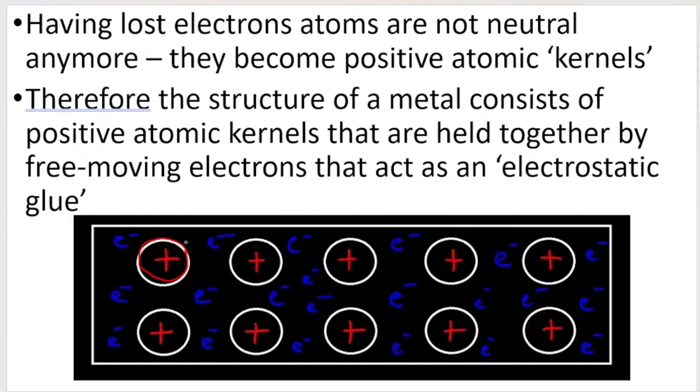We have the positive atomic kernels, that's these things over here. And they are held together by the free moving delocalized electrons. You can see them over there, the free delocalized electrons. And these little electrons float between the positive kernels and kind of stick them together. It holds the positive kernels together. So they act like an electrostatic glue. So that is basically it. That is metallic bonding. Very simple, very straightforward.